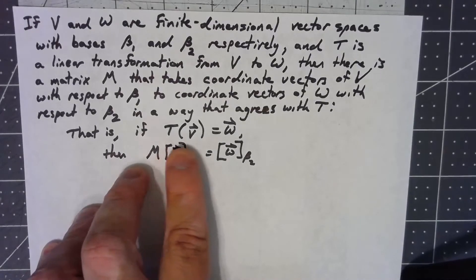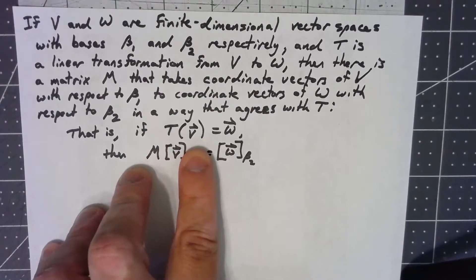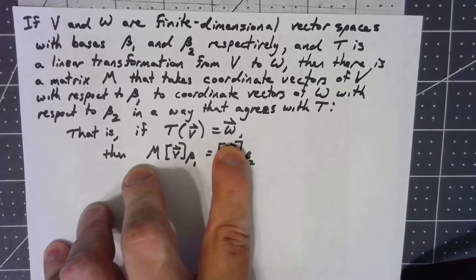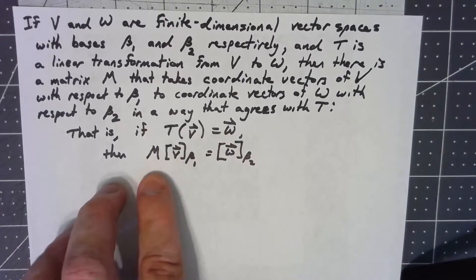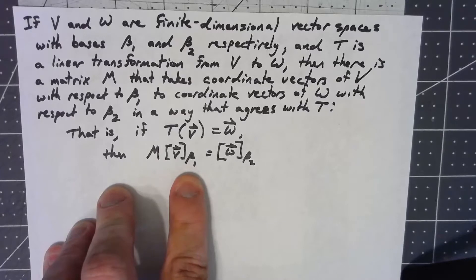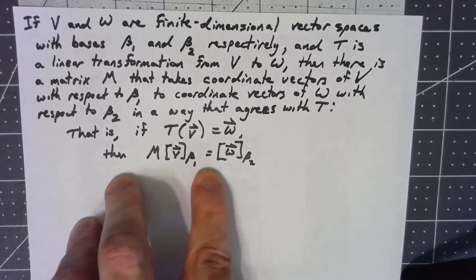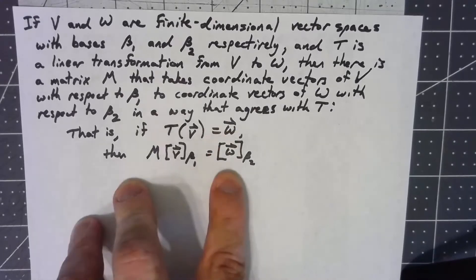So that is, if we take any vector in V, it maps to a W, then multiplying the coordinate vector for V with respect to the basis for V times this matrix M should give us the coordinate vector for W.